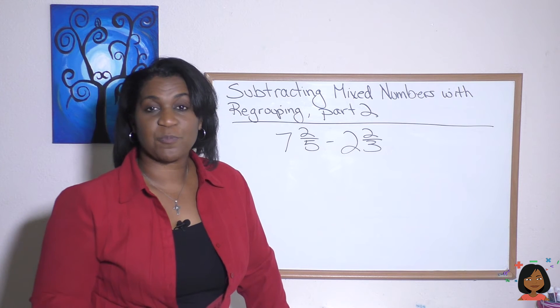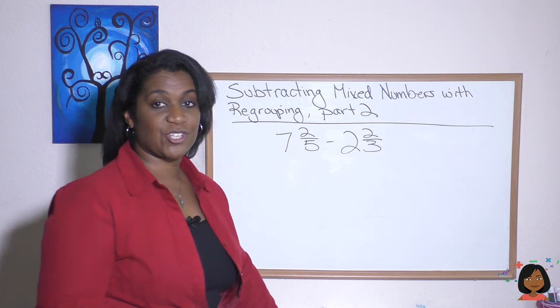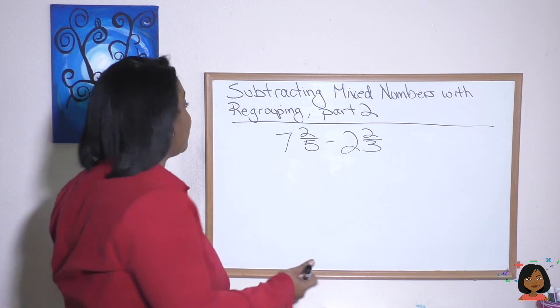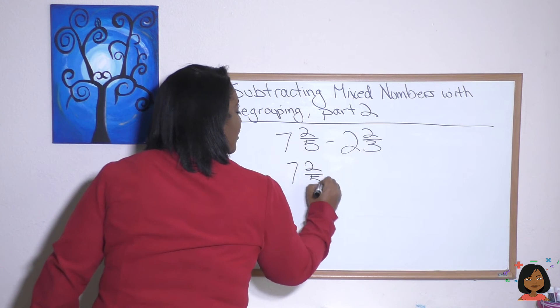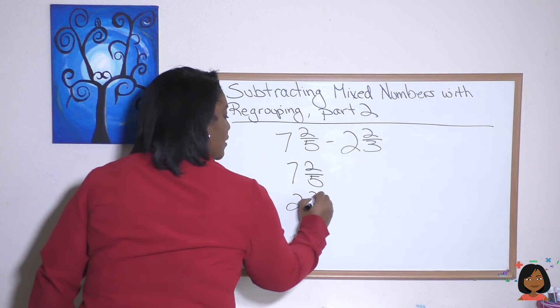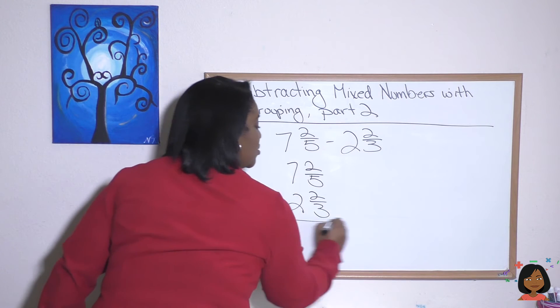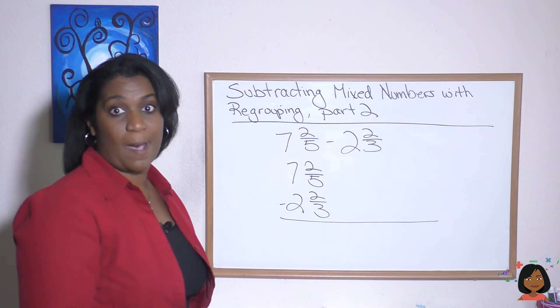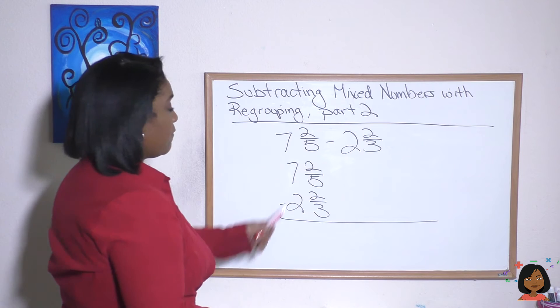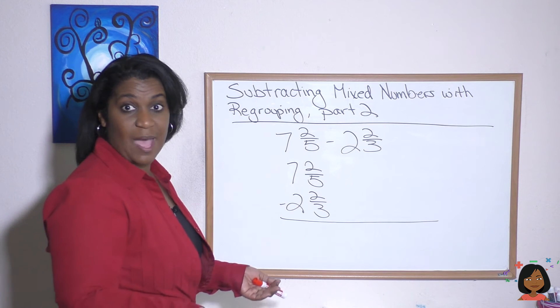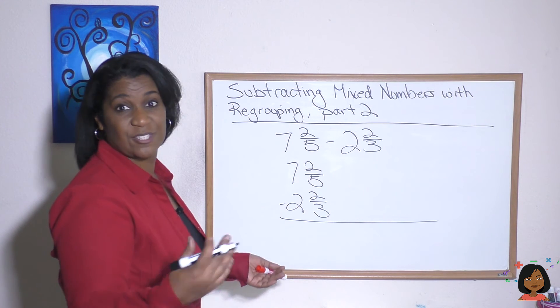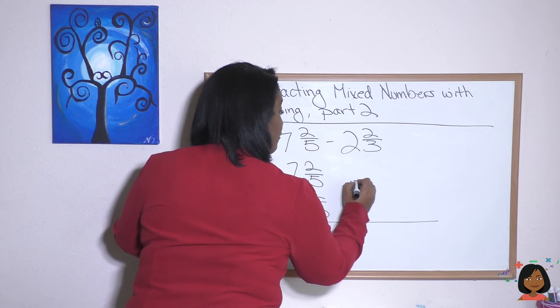Let's check out this problem. So we have a subtraction. I'm going to rewrite it because it makes my life easier to rewrite it vertically. Okay. Now we can see we do not have a common denominator. So we need to give it one. Five and three, the common denominator, the least common multiple is 15. So let's use 15 for both of them.